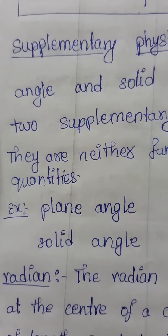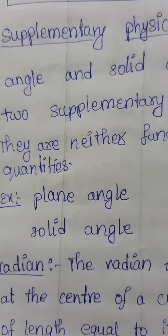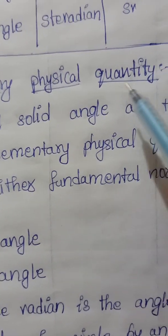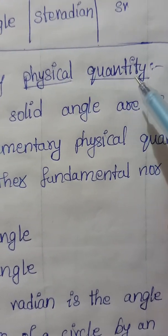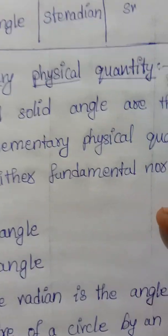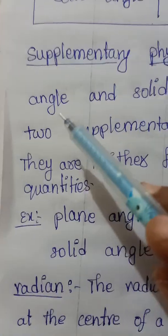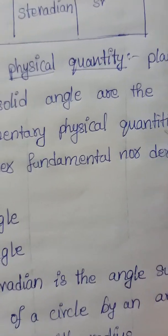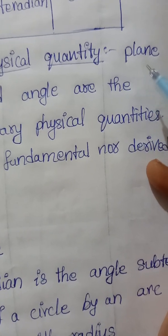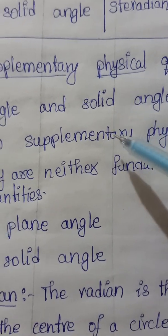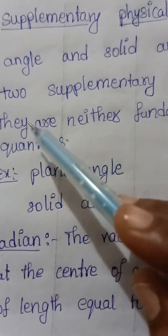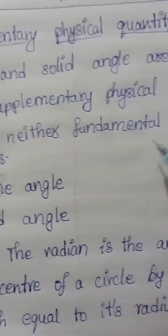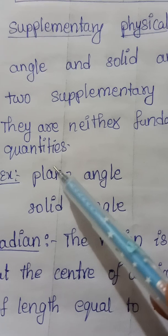Hi everyone, welcome to Shukatika Smart Learning. Now we are going to learn about the supplementary physical quantities. Supplementary physical quantities measure angles. There are two supplementary physical quantities: plane angle and solid angle. These supplementary physical quantities are neither fundamental nor derived quantities.